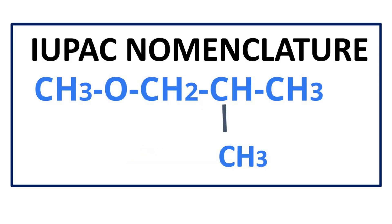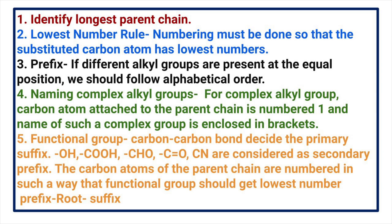Welcome to Aurora Chemistry for Everyone. We are here to write the IUPAC name of CH3O-CH2-CH(CH3)-CH3. To write the IUPAC name, certain rules are there that we need to follow. As per the rules, we need to find the longest parent chain, and if a functional group or substituents are present, they should get the lowest number.